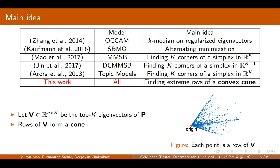The main idea of our algorithm is to find extreme rays of a convex cone, with the observation that if we let V be the top-K eigenvectors of P, then the rows of V form a cone.